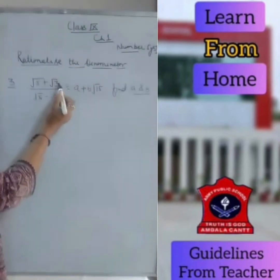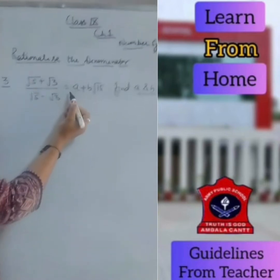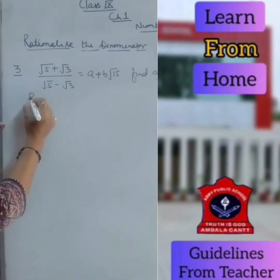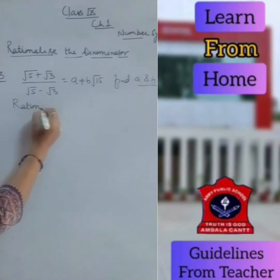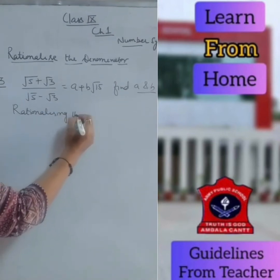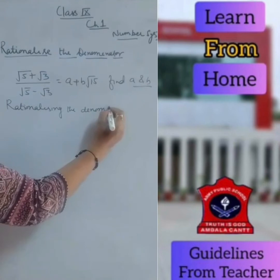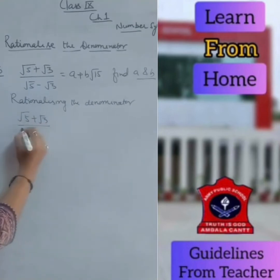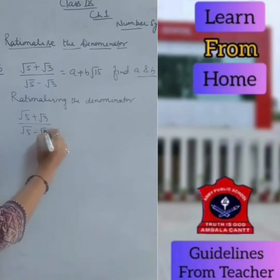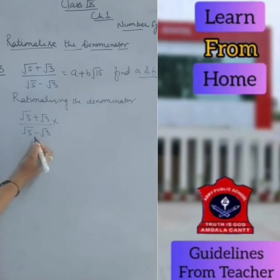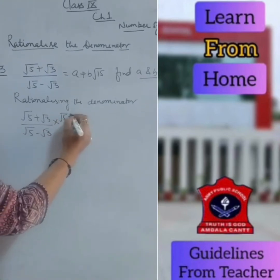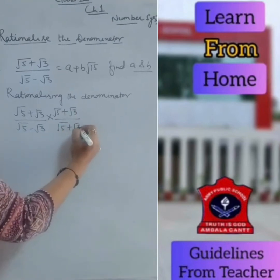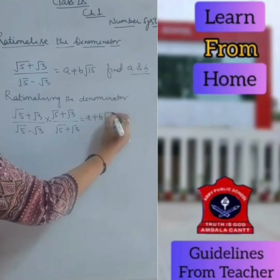Now the question is: root 5 plus root 3 upon root 5 minus root 3 equals A plus B root 15 — find A and B. Rationalizing the denominator: multiply and divide by root 5 plus root 3, which is the opposite sign of the denominator. The right-hand side remains A plus B root 15.